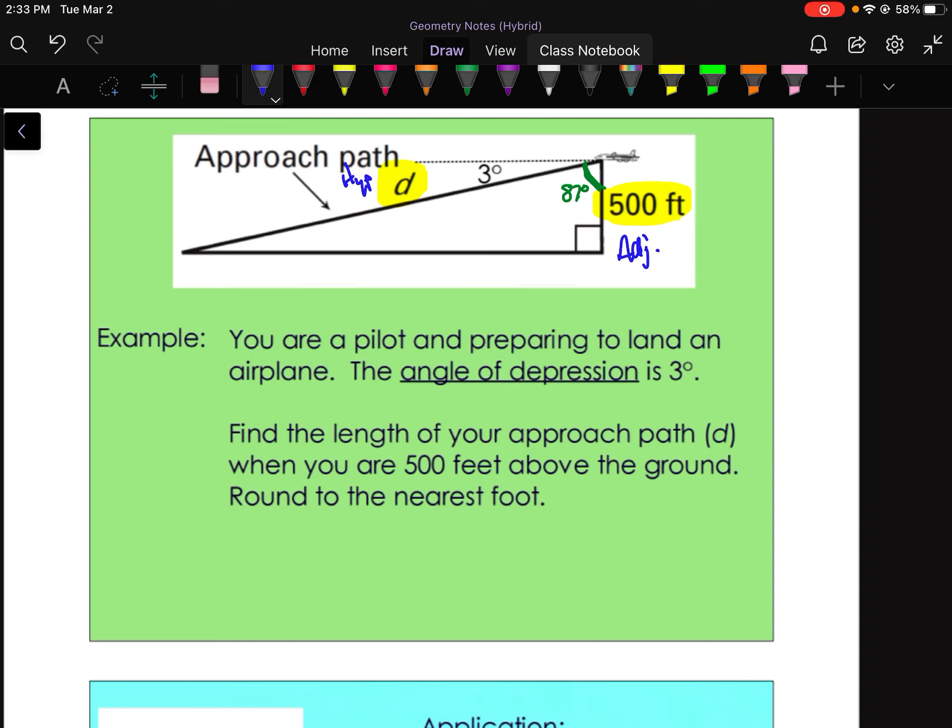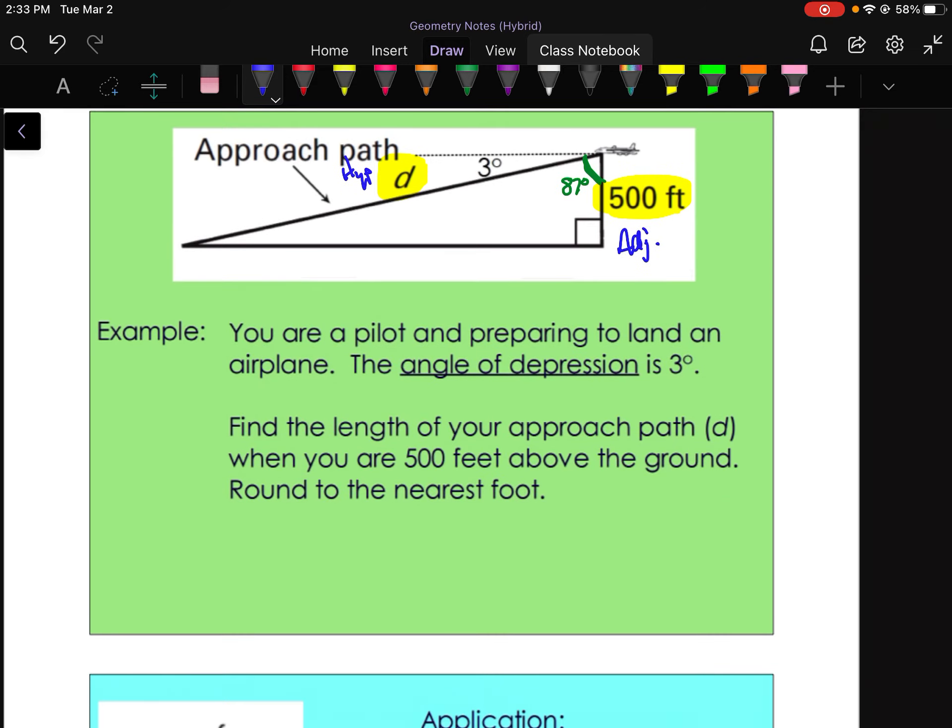Hopefully you're sitting there telling me that it is cosine. I know you're just yelling at your screen right now, saying, hey, I know what this is. It is cosine. All right, settle down. It is cosine. Cosine of 87 degrees equals adjacent, so 500 over D, the hypotenuse.